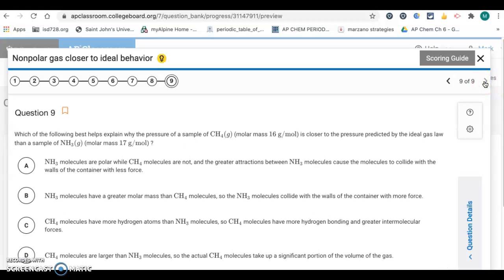And then question number nine. Which of the following best helps explain why the pressure of a sample of CH4, which gives you the molar mass of 16 grams per mole, is closer to the pressure predicted by the ideal gas law than a sample of NH3 molar mass of 17 grams per mole? So the predicted pressure by the ideal gas law, so this is saying that CH4 behaves more ideally than NH3. Or another way to look at it is NH3 deviates more from the ideal gas law than CH4. Okay, so the reason why, it's not based on size. They're both about the same size, 16 grams per mole.